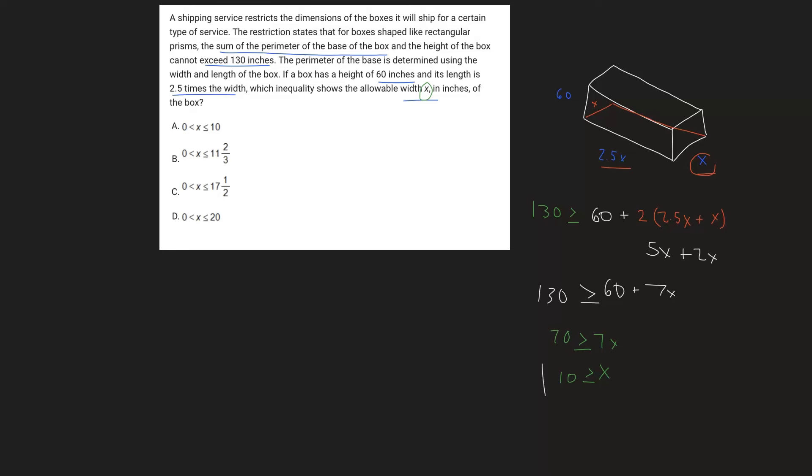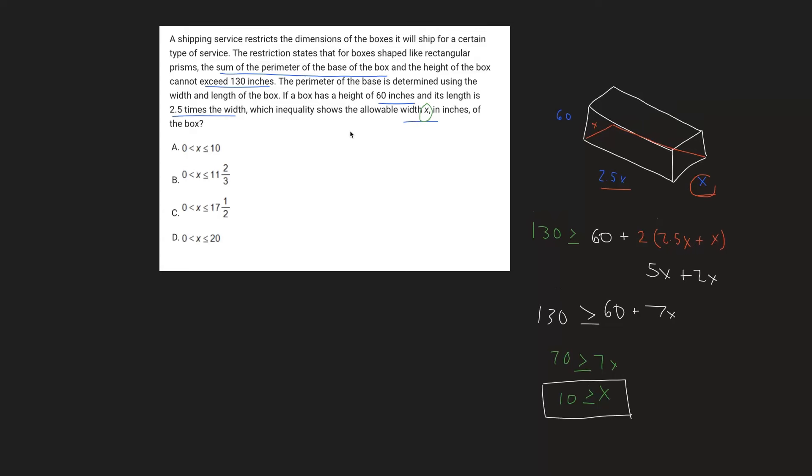So we get this inequality over here, and we want to match it up to the answer choices. So let's look at our answer choices. So for A, we have x is greater than 0 but less than or equal to 10. Well, that actually lines up exactly with our equation. For all these inequalities, x has to be greater than 0, which makes sense because you can't have a width of 0 for a box like a rectangular prism. And therefore, since this part of the inequality matches up with what we have down here, it's the same thing but flipped. Our answer choice is going to be A.